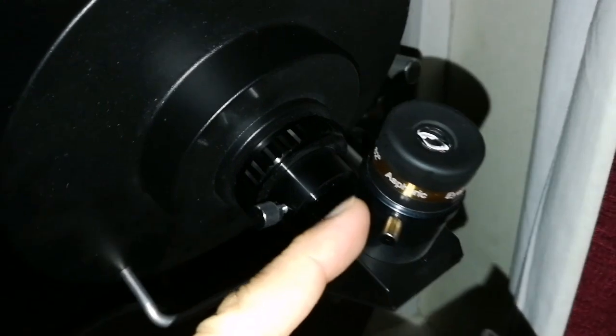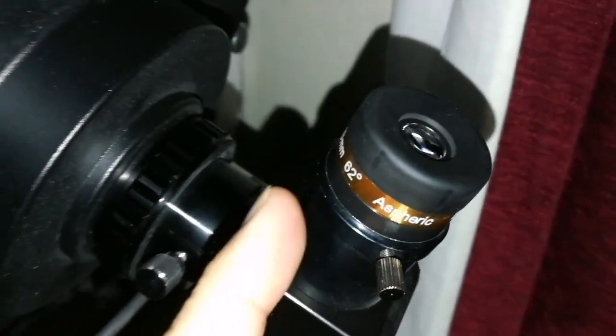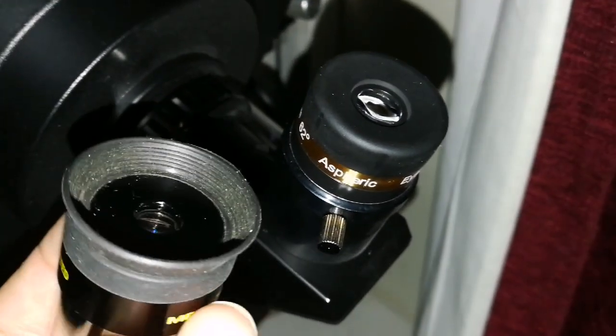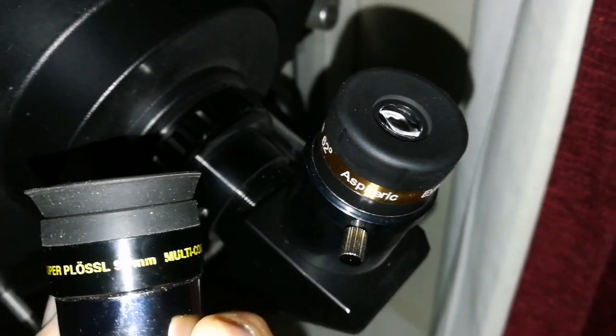Okay, this is the Aspheric SV Boney 10mm eyepiece, and this is a mid 9.7mm, a similar kind of eyepiece.